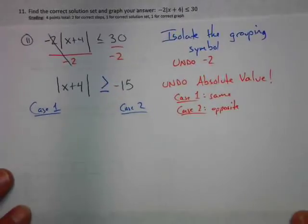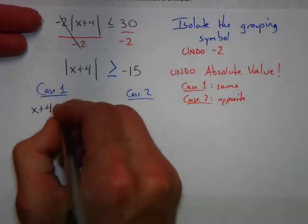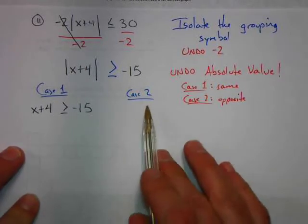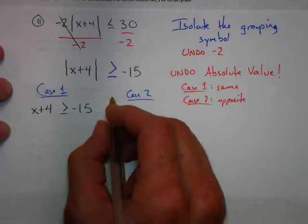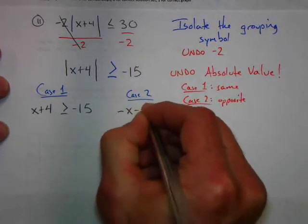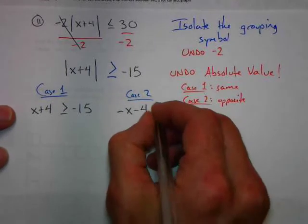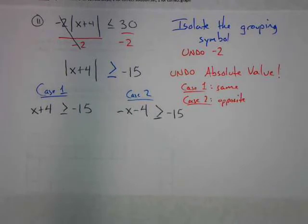For case one, what's inside stays the same — x plus four stays the same, and everything else comes along with it. For case two, what's inside is the opposite. I'm going to show the faster way: I just change the signs to show that what's inside is the opposite. Everything else remains the same. If you've been using the textbook, it shows a slightly different way — you can choose whichever method you find most helpful, and use the online tutorial videos from the textbook's website.